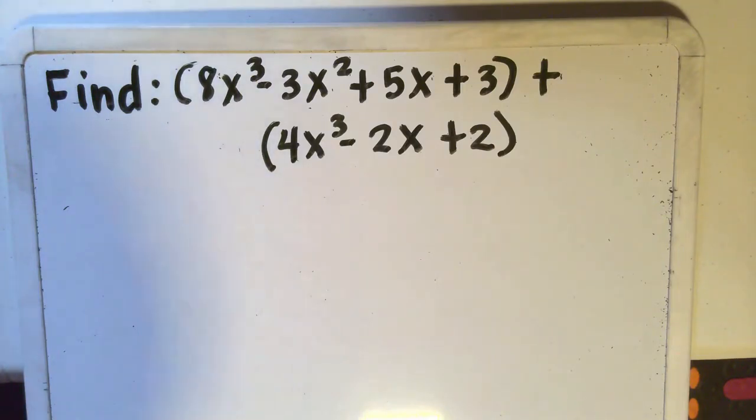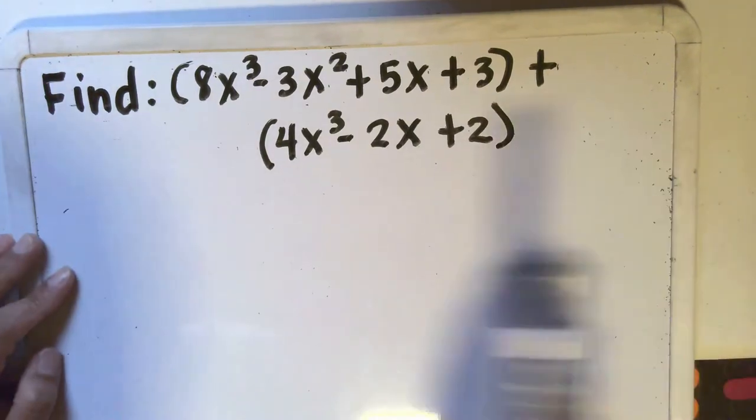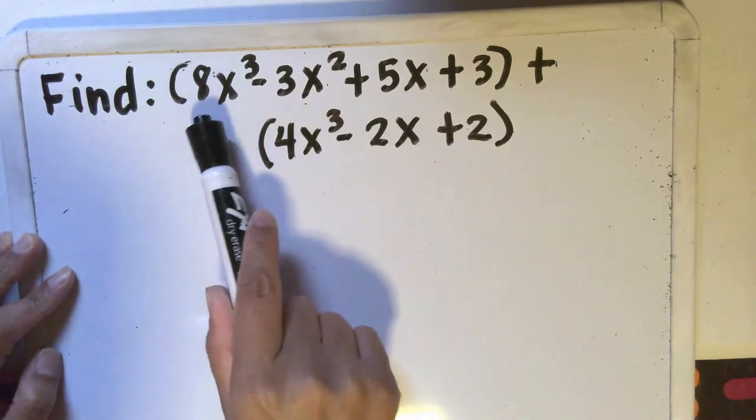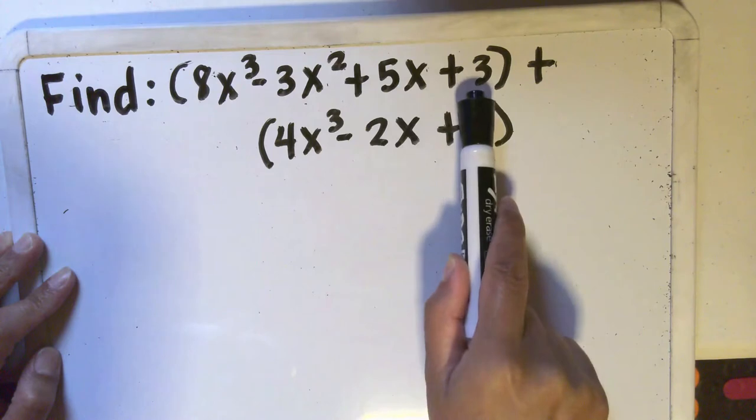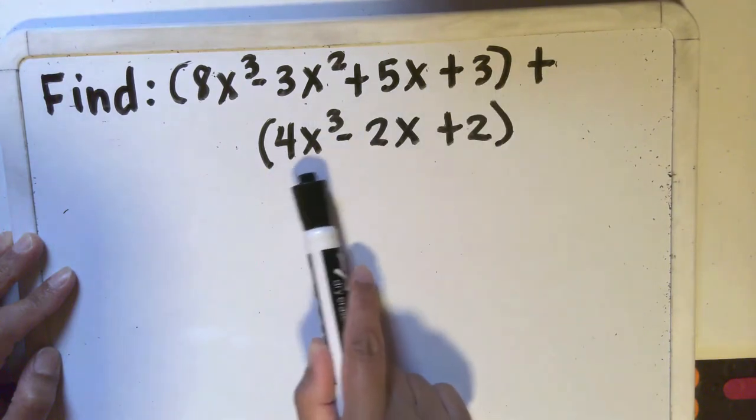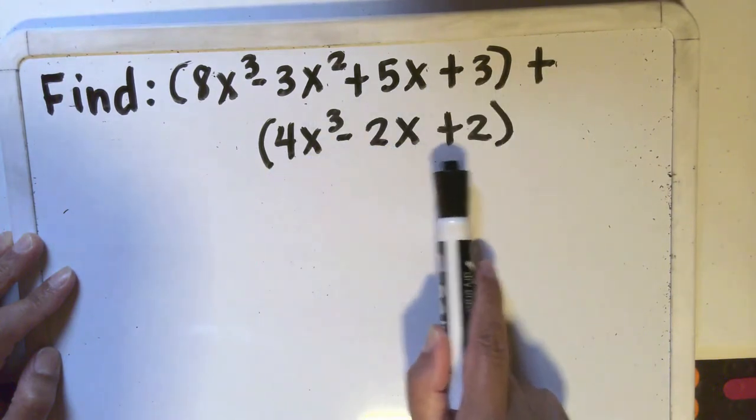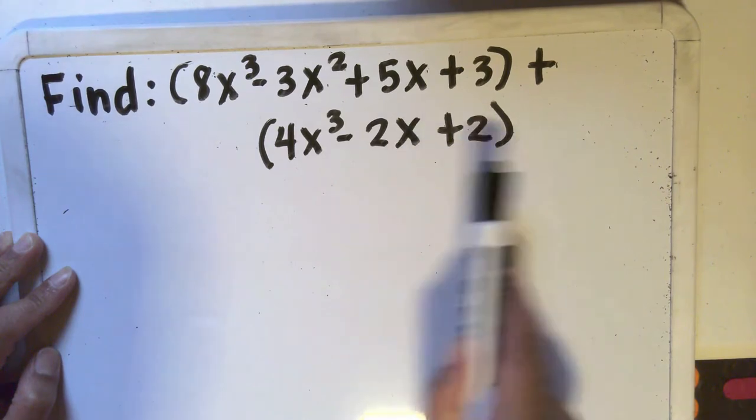This video is about adding polynomials. Let's say you're asked to find quantity 8x³ - 3x² + 5x + 3 plus quantity 4x³ - 2x + 2. So what's happening here is you're adding not just the 4x³ to the first expression, but this entire expression should be added to the first expression.